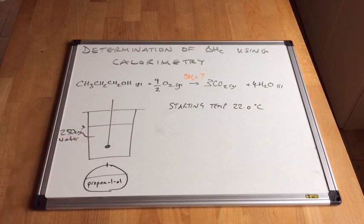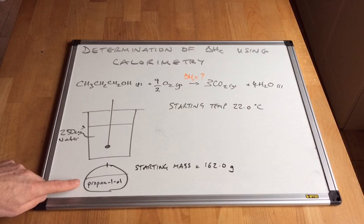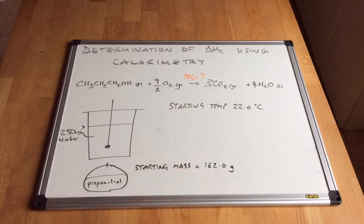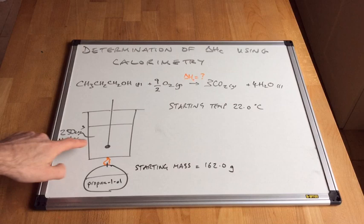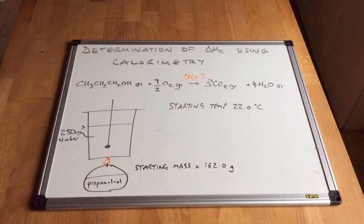So let's imagine the temperature of the water has been recorded before the propane-1-ol has been lit and it's at 22 degrees Celsius. We would also need to record the mass of the spirit burner. So the starting mass we're going to say is 162.0 grams. We've lit the burner now and what it's going to do obviously it's going to heat this water up. And the mass will obviously drop as the fuel is converted to carbon dioxide and water.